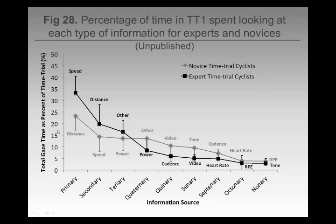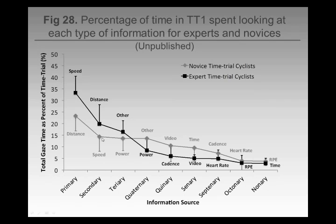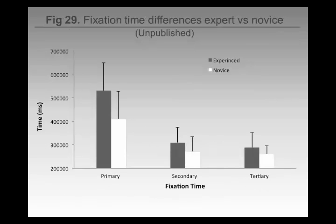When we look at the second time trial, we get a bit of a learning effect in the novices — they're starting to look at speed a little bit as well. We've still got the same pattern where experts are looking at speed and distance high up, but novices are still looking at distance as a primary source. Speed has been promoted though — they're now starting to look at speed as well. There's a kind of learning effect in these novices in terms of the type of information they're looking at.